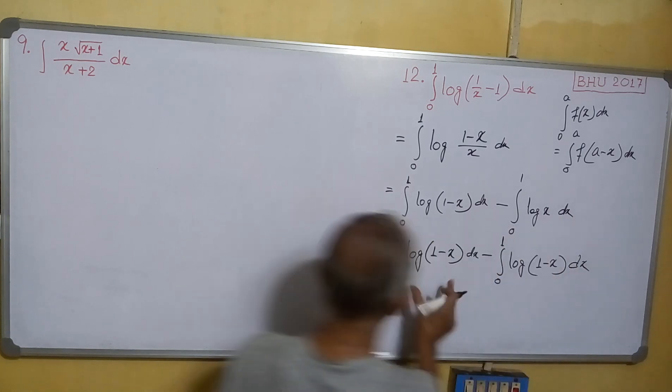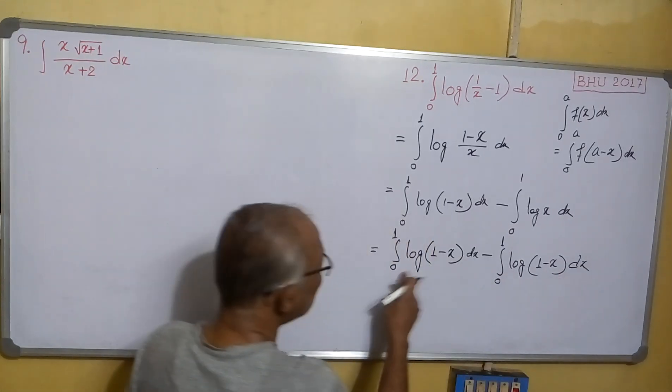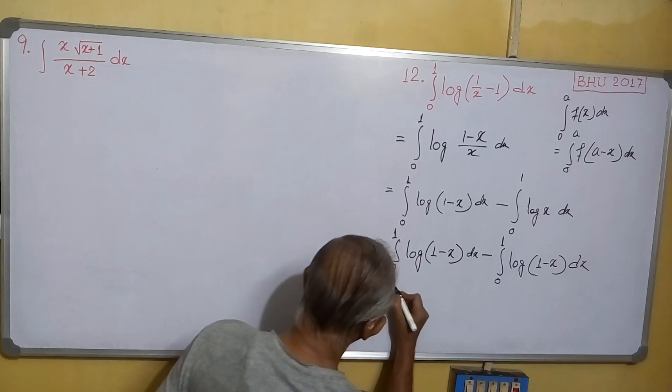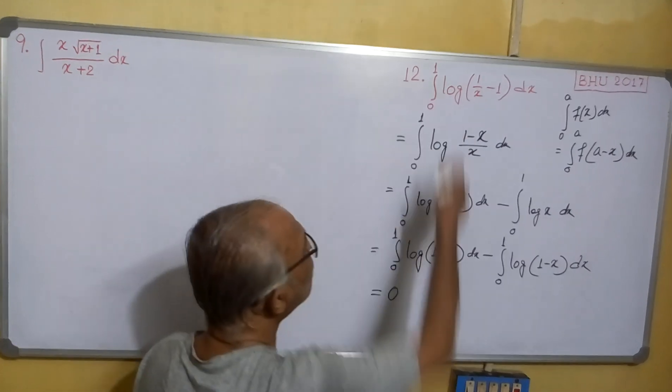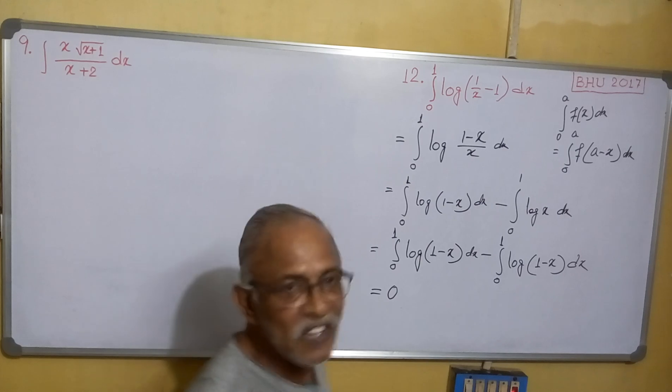See, this one and this one are the same. Hence it equals 0. This is a simple solution of this problem.